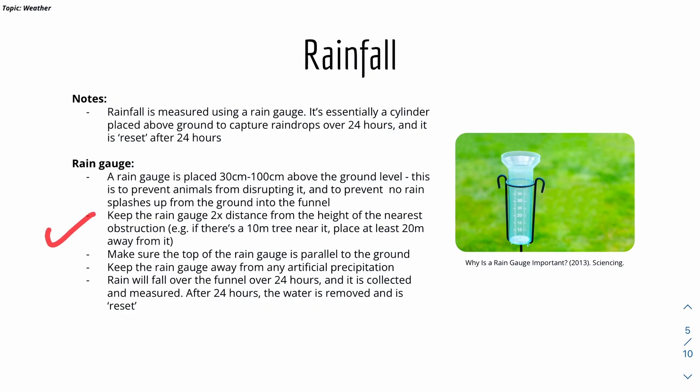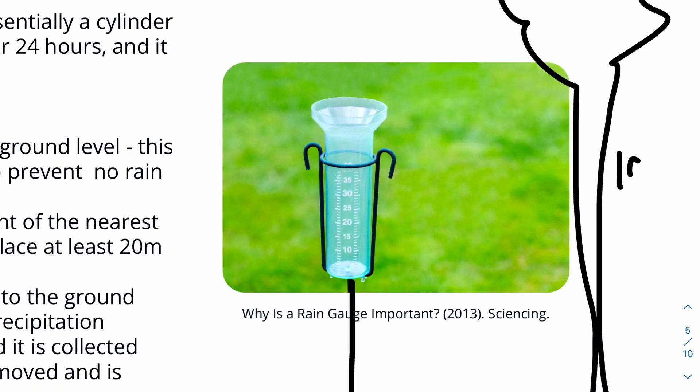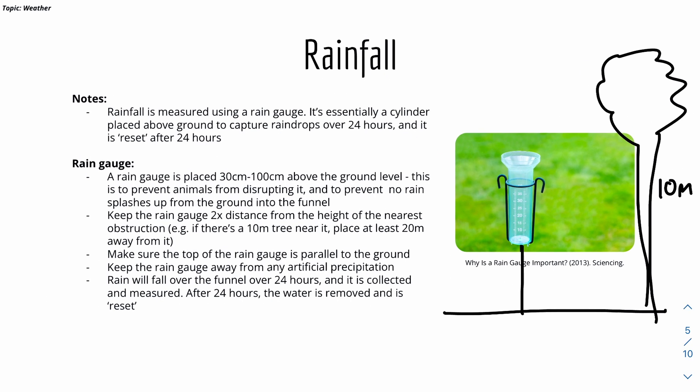It's also important to keep the rain gauge at least two times the distance from the height of the nearest obstruction. So for example, let's say we have this rain gauge over here. And we have a 10m tree, like a tree. It's a badly drawn tree. But it's 10m tall. This means that the rain gauge has to be placed at least 20m away from the tree.